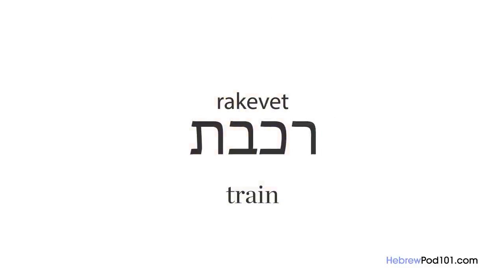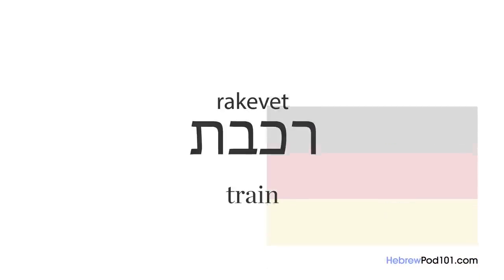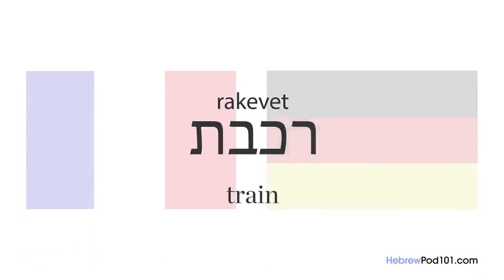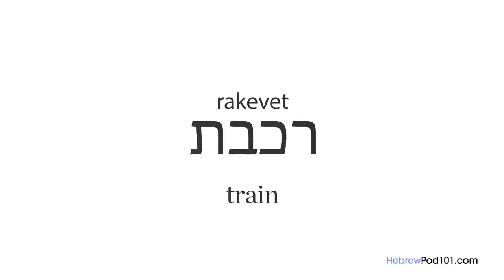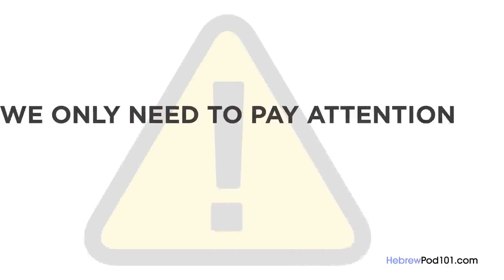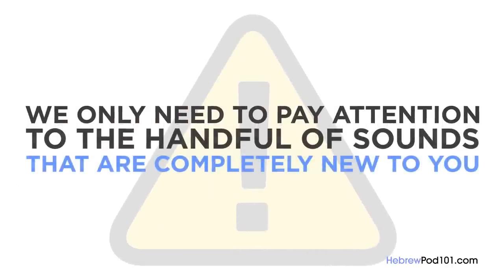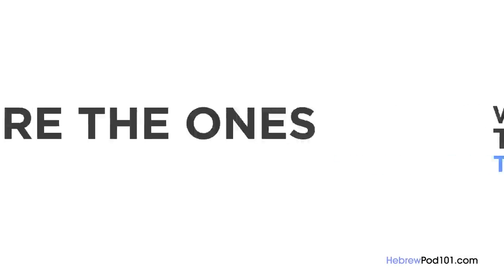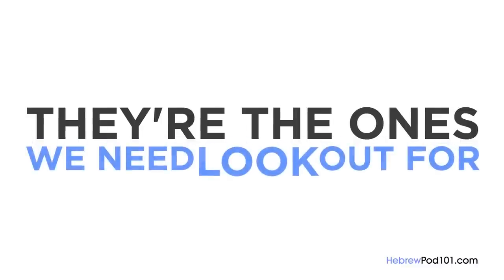Listen to Idit say this letter. It's actually closer to the German or French R, but without the roll. Nearly all sounds in Hebrew are identical to English, like the K, V, and T sounds. Since you already know how to pronounce most of these sounds, we only need to pay attention to the handful of sounds that are completely new to you.